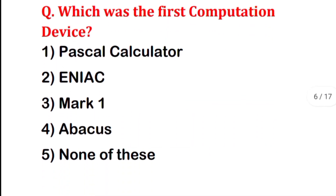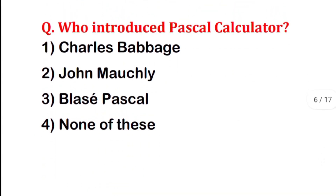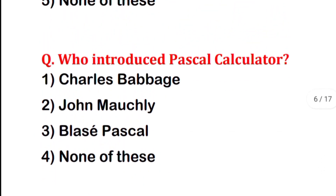Which was the first computing device? Options are: Pascal Calculator, ENIAC, Mark 1, Abacus, or None of these. The correct answer is the fourth option — Abacus. This was our first computing device.